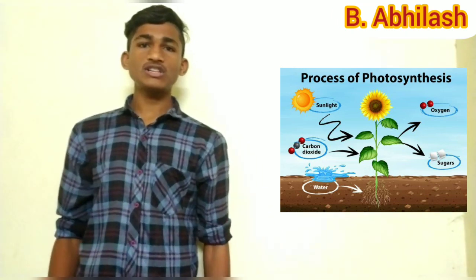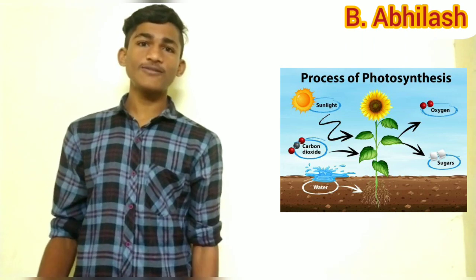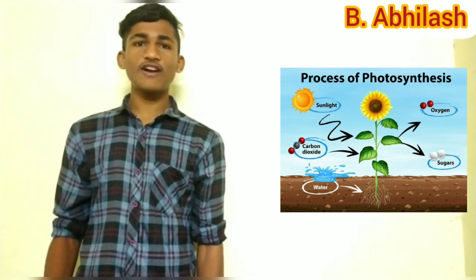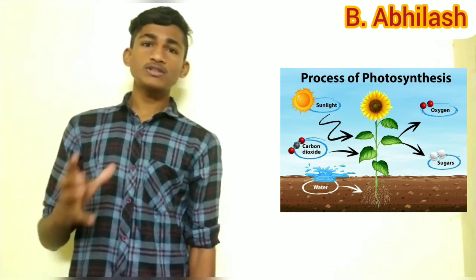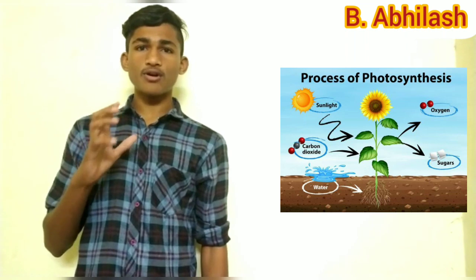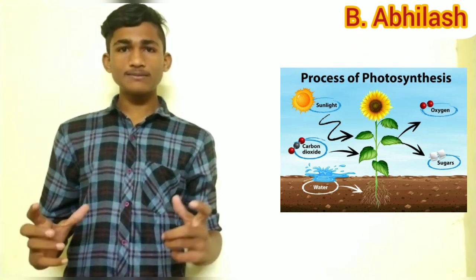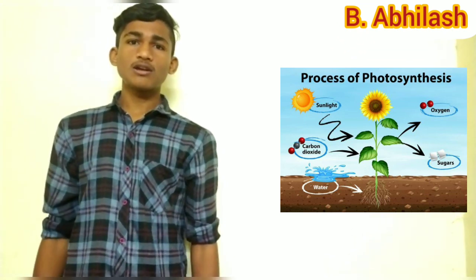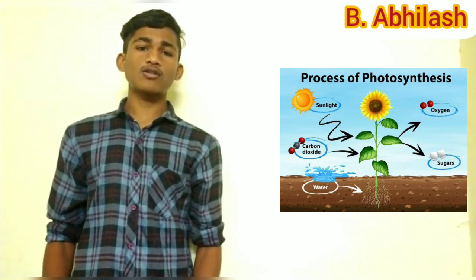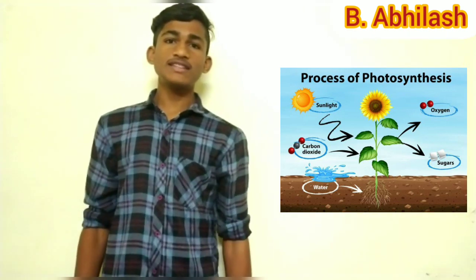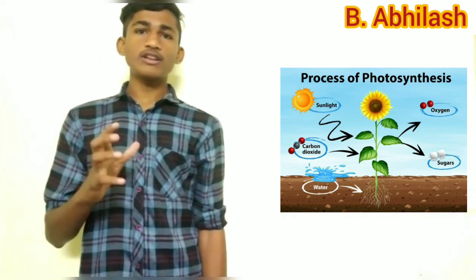What is photosynthesis? Can we define photosynthesis? Yes, we can define photosynthesis. Photosynthesis is a process by which plants contain a green pigment, chlorophyll, and build up a complex organic compound from a simpler inorganic one by using sunlight as energy.